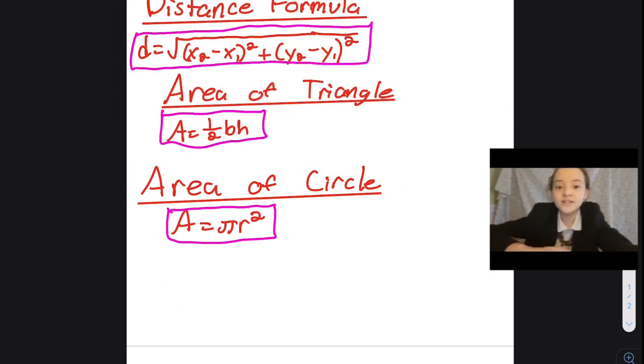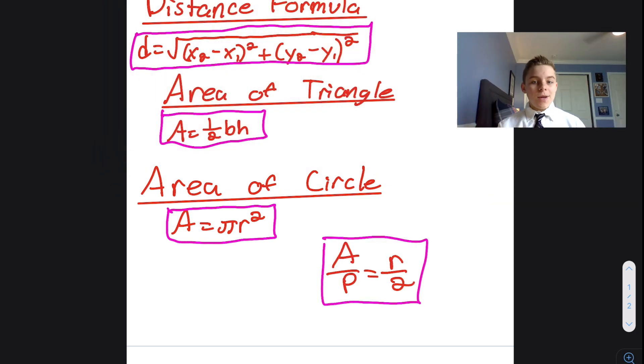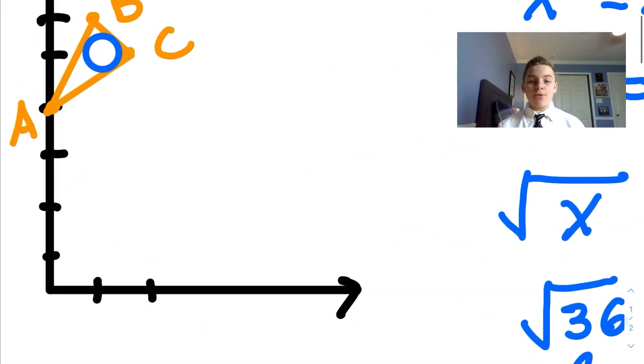Our final equation is the area divided by perimeter equals the radius divided by 2. To get to this equation, we need to divide the triangle into three separate equal parts.